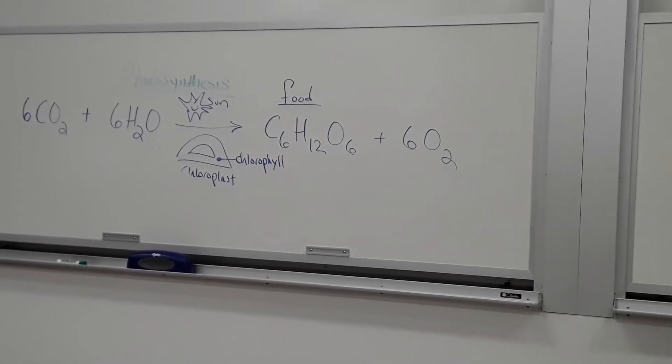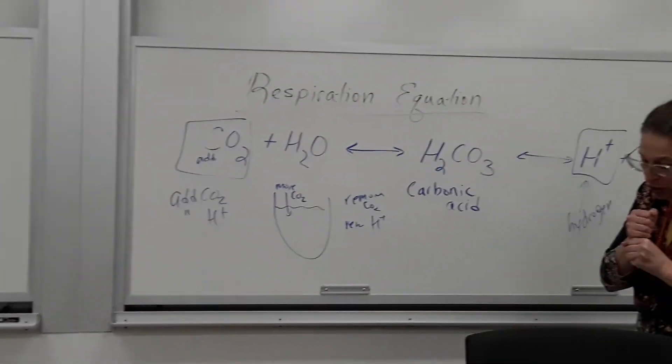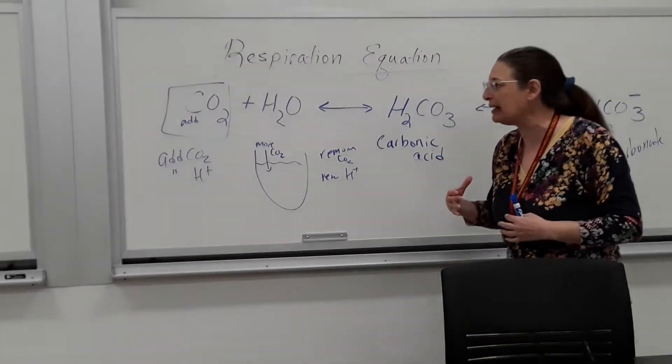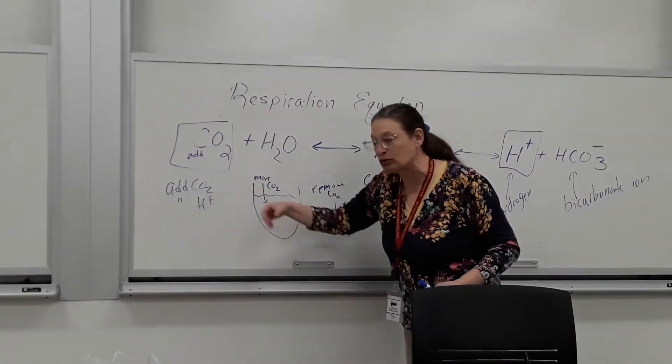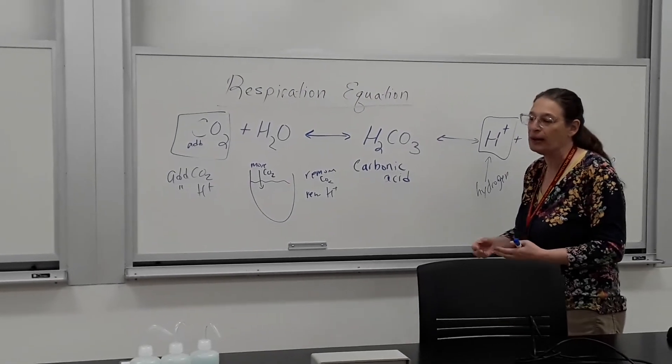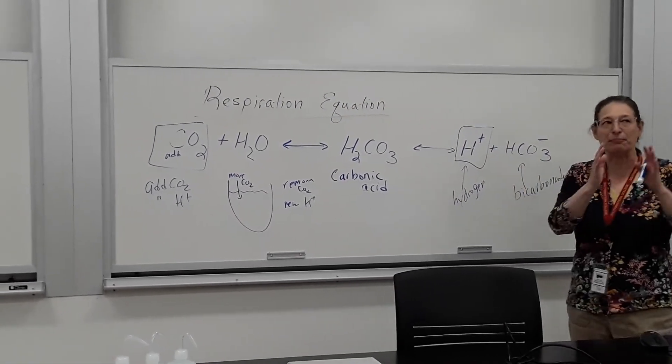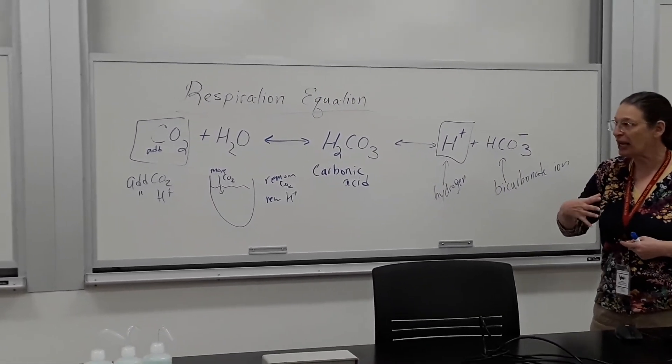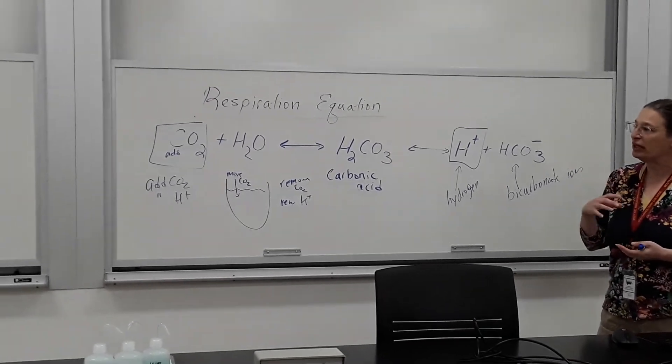The more CO2 we added, it changed color, and that yellow change to the phenol red shows us that there's CO2 in there. When we add plants and put it in the sunlight, that plant will be taking that CO2 and extracting it.